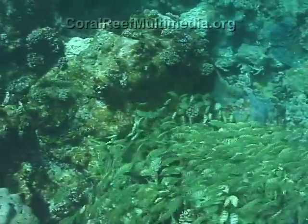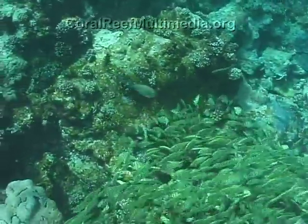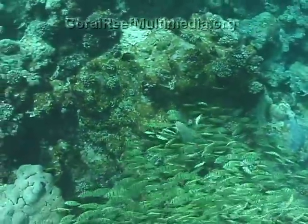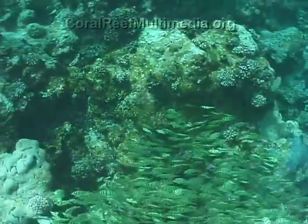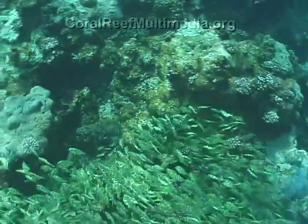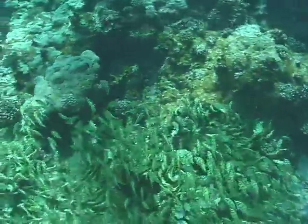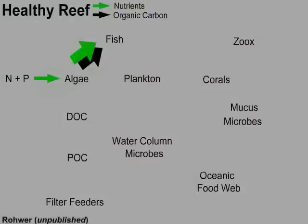The remaining algae contribute to the carbon cycle through the release of photosynthetic products in the form of dissolved organic carbon, DOC, into the water column. The residual fraction of organic carbon that has not dissolved contributes to the particulate organic carbon, POC.